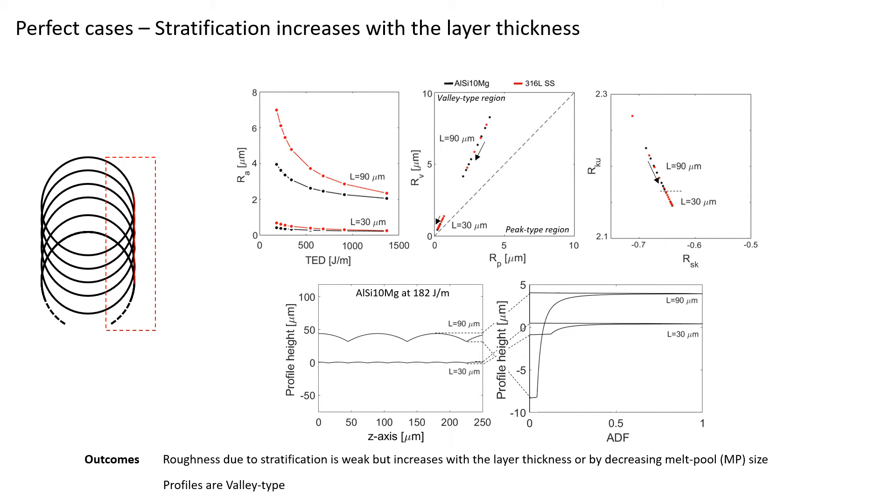Let's now play with the model and see the outcomes. Results are presented as Ra as a function of TED for two layer thicknesses and two materials. Rv and Rp are presented as a map, and the same for Rsk and Rku. First thing to observe: roughness due to stratification is very small, below 1 micron for 30 micron thick layer. However, roughness increases by increasing the thickness layer or decreasing the level of TED. So the stratification is bad if the thickness layer is large or if the melt pools are very small.